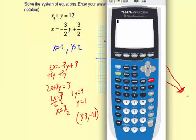So let's try the first equation, x plus y equals 12. So it'll be 33, and then plus negative 21, or minus 21, equals 12. Okay, so it works in the first equation.